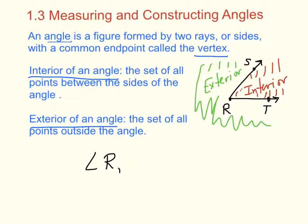The R has to be the middle letter, though, since it's the vertex. So S, R, T, or Angle T, R, S. I can also name it by a little number, which is Angle 1. Now, if it was Angle 1, then I'd have to put a 1 right here. Let me do it in blue so it's easier to see. There's a 1 right there. So we'd have to put a 1 within the angle, and we could call it Angle 1.